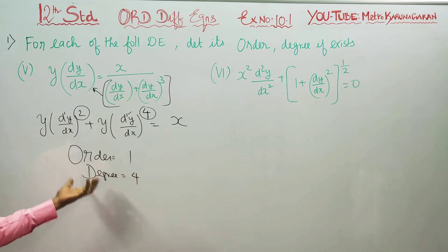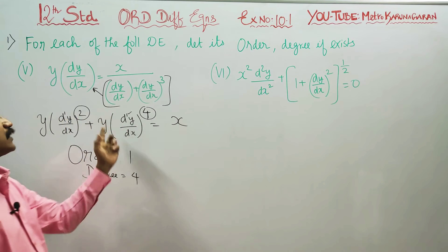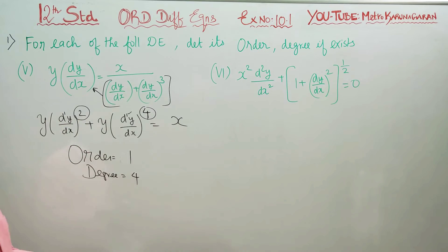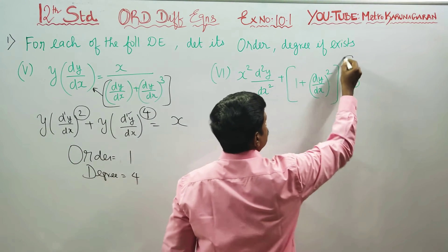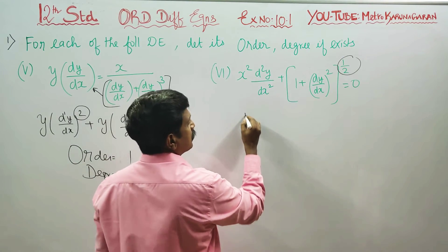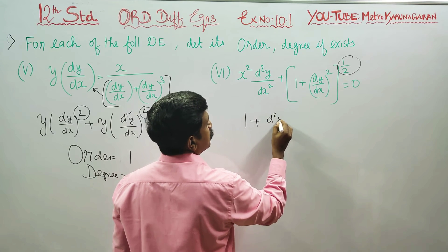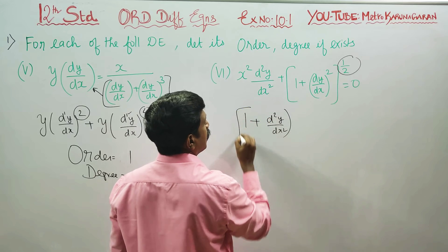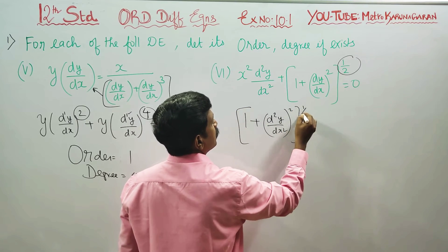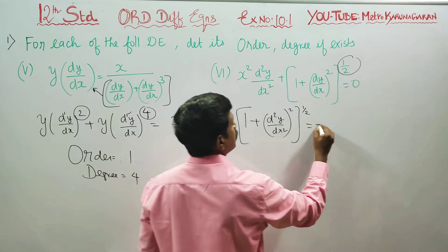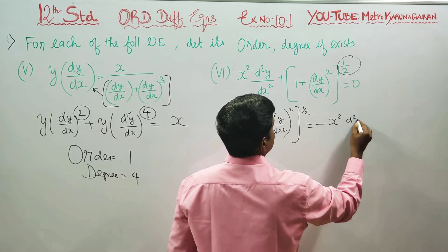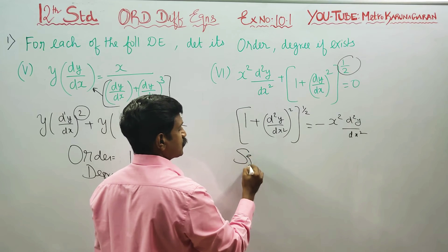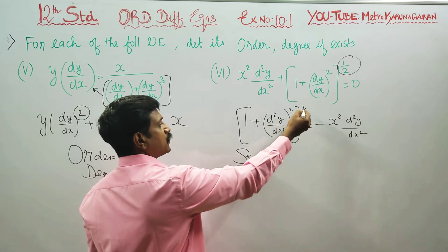Decoder number 1 and order is 1. The highest power is 4. Power 1/2 is in fraction, so first thing is: 1 plus (dy/dx) whole square, whole power — squaring both sides to eliminate the fractional power, giving this whole square equal to minus x squared times d²y/dx².